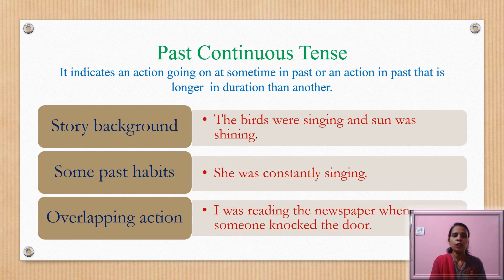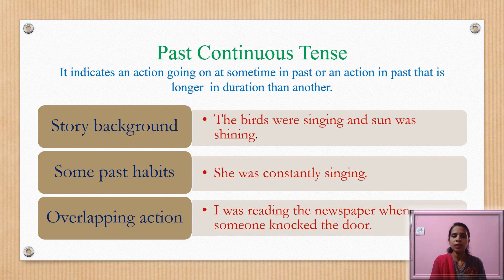Some past habits are also expressed in past continuous tense. For example, 'She was constantly singing.' Words like constantly, continually, and always are used in this tense. For example, 'Mother was always scolding her children,' or 'The boys were always complaining about their food.' For overlapping actions, whenever two actions are mentioned, the action which is longer in duration is written in past continuous. For example, 'I was reading the newspaper when someone knocked at the door.' Here, reading the newspaper is the longer action.